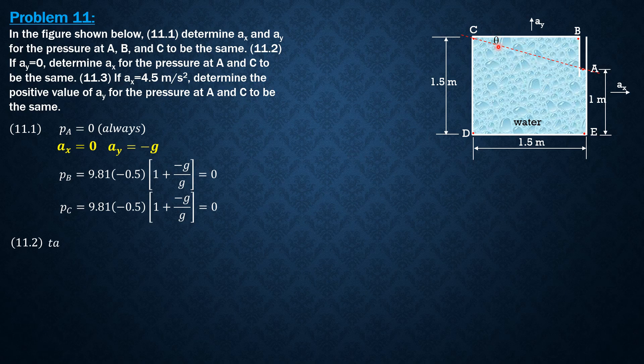So we will call the angle here as theta. So tangent theta is AX over G and it is also equal to 0.5. This is 0.5 over 1.5.